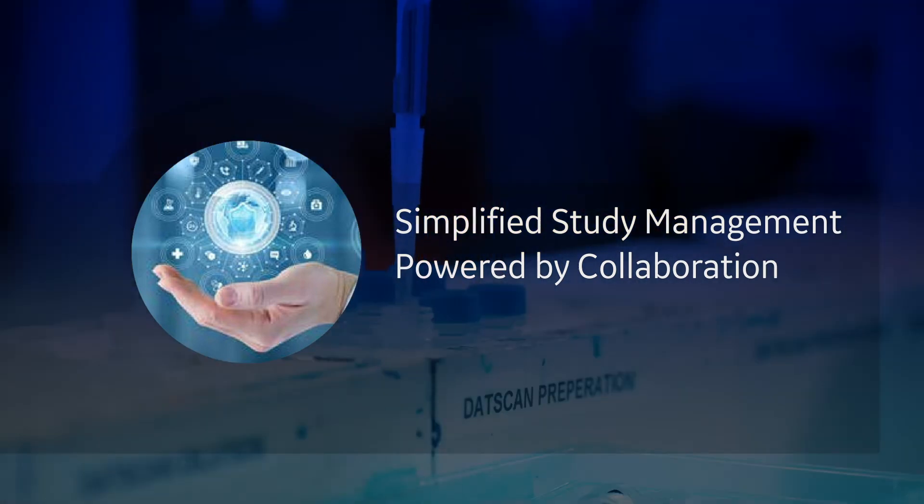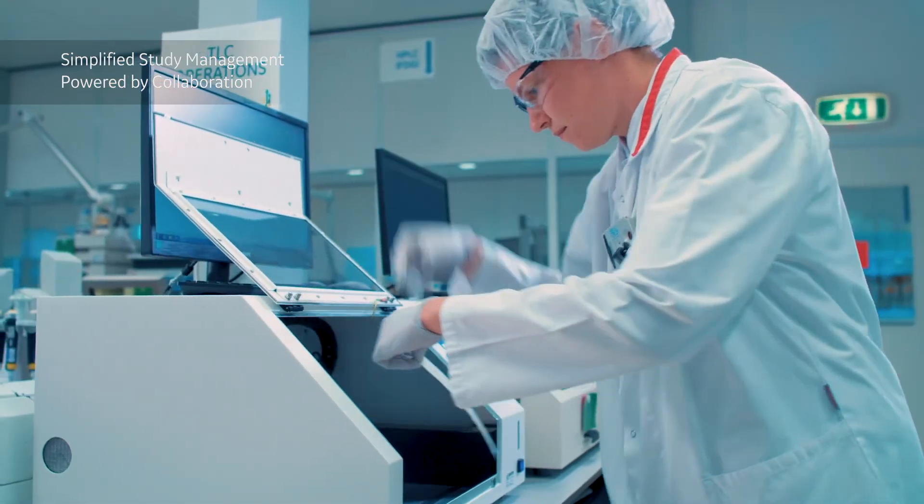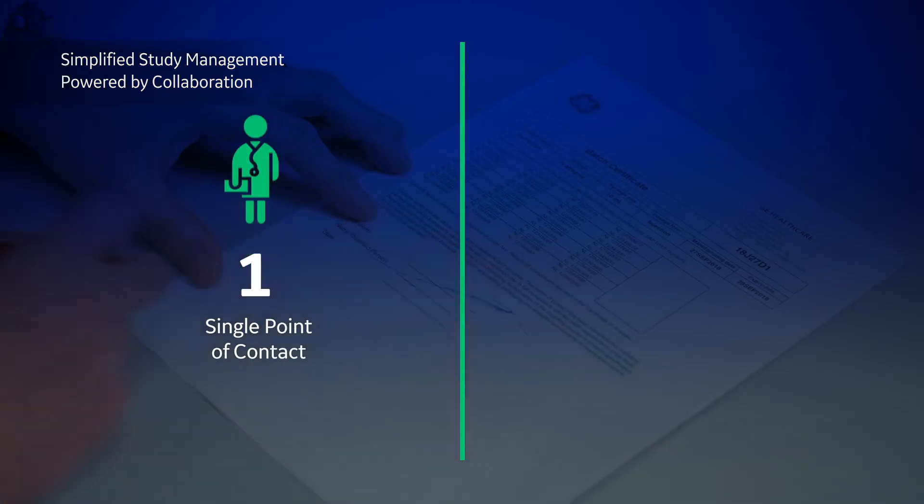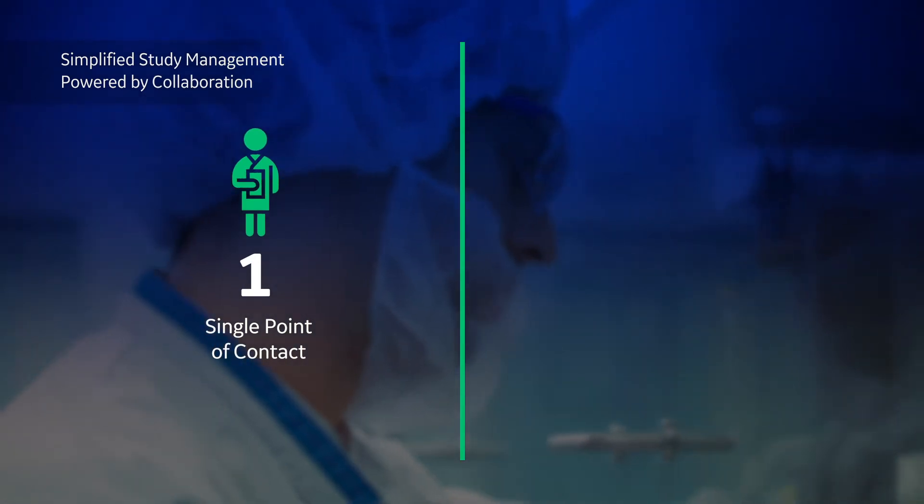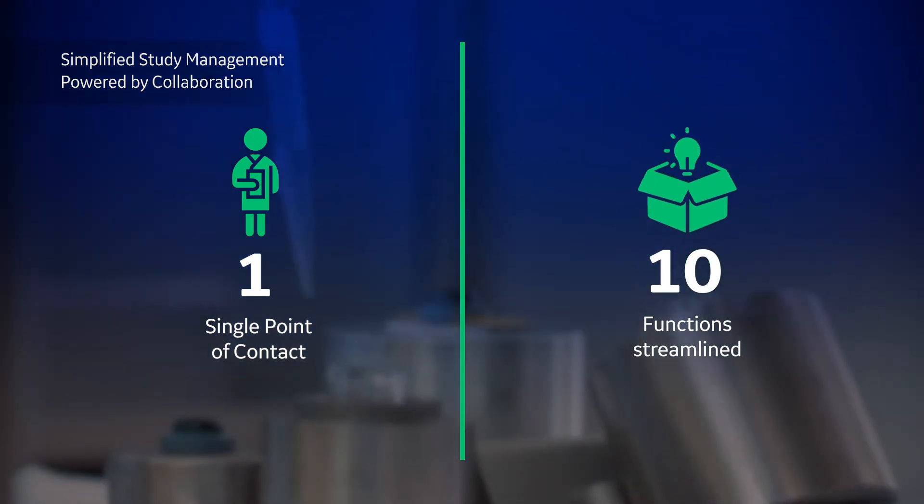GE Healthcare Pharma Services provides tailored wing-to-wing expertise to support streamlined communication, contracting and execution managed through a single point of contact across 10 functional groups, including regulatory, legal, finance and quality assurance.